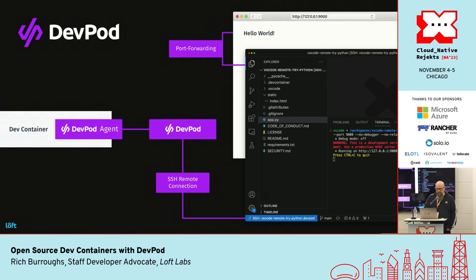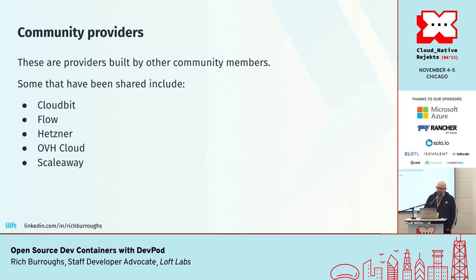DevPod makes an SSH remote connection to your IDE — VS Code or whatever you use — and then you can port-forward so you can interact with your running application. There are also community providers: providers built by other people in the community that you can access right from inside the DevPod app.